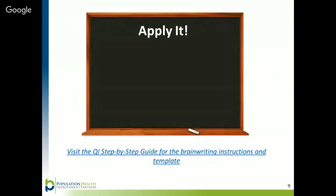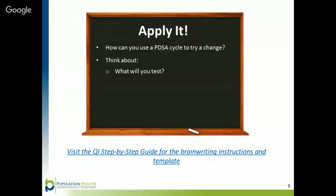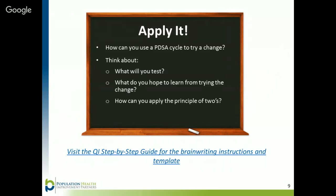Now let's try it. Think about a change you want to make, either in your personal life or at work. How can you use the PDSA cycle to try the change on a small scale? Consider: What will you test? What do you hope to learn from trying the change? How can you apply the DROP 2 principle? And how can you try the change on the smallest scale possible? I encourage you to use the provided link below to check out the quality improvement step-by-step guide for links to the PDSA template worksheets and examples. Thanks for listening in and happy testing!